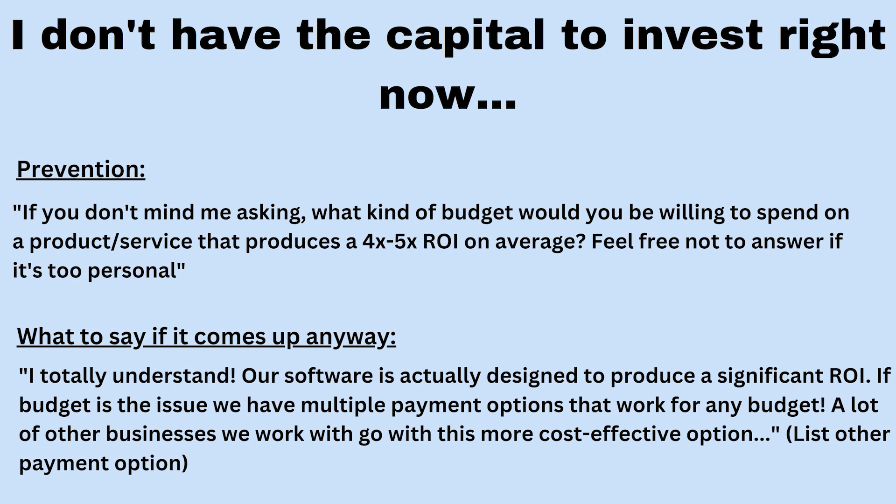If you didn't address this upfront and it does come up at the end of the call, you can say: I totally understand — our software is actually designed to produce a significant ROI. If budget is the issue, we have multiple payment options that work for any budget. A lot of other businesses we work with go with a more cost-effective option, and then you list the cheaper option or break it into smaller payments. It eliminates them having an out — if the first price was too expensive, you have other options, and they can't logically come back from that.